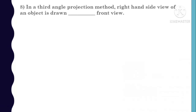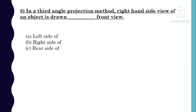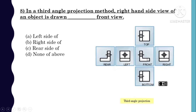MCQ 8: In the third angle projection method, the right-hand side view of an object is drawn. The observer is here, plane is there, then object. The right-hand side view is captured on the right side of the front view.